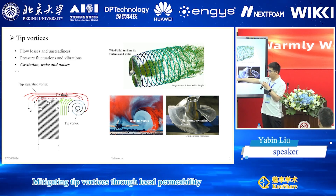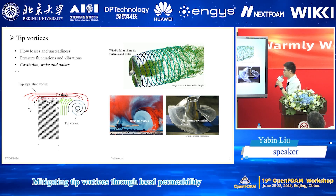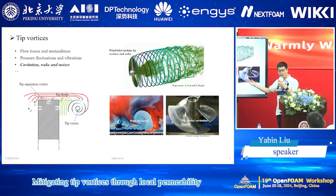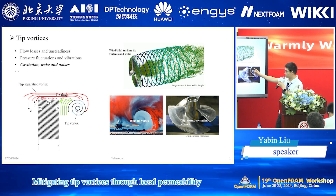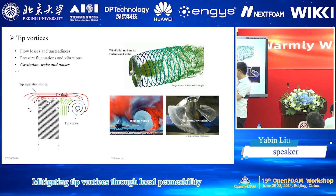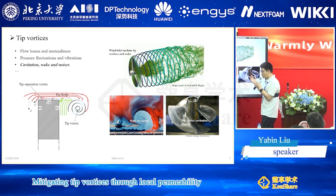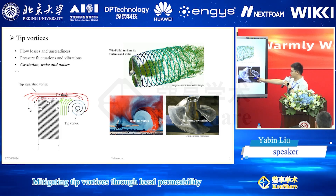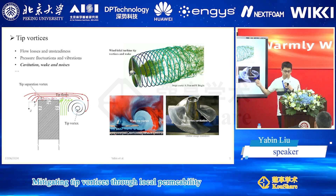It causes similar problems for aircraft, causing induced drag. Another problem that exists in underwater systems — for example, a propeller or tidal turbine — is that this tip vortex structure will generate a suction peak of low pressure. This low pressure will cause a phenomenon called cavitation, which will collapse and then damage the blade.